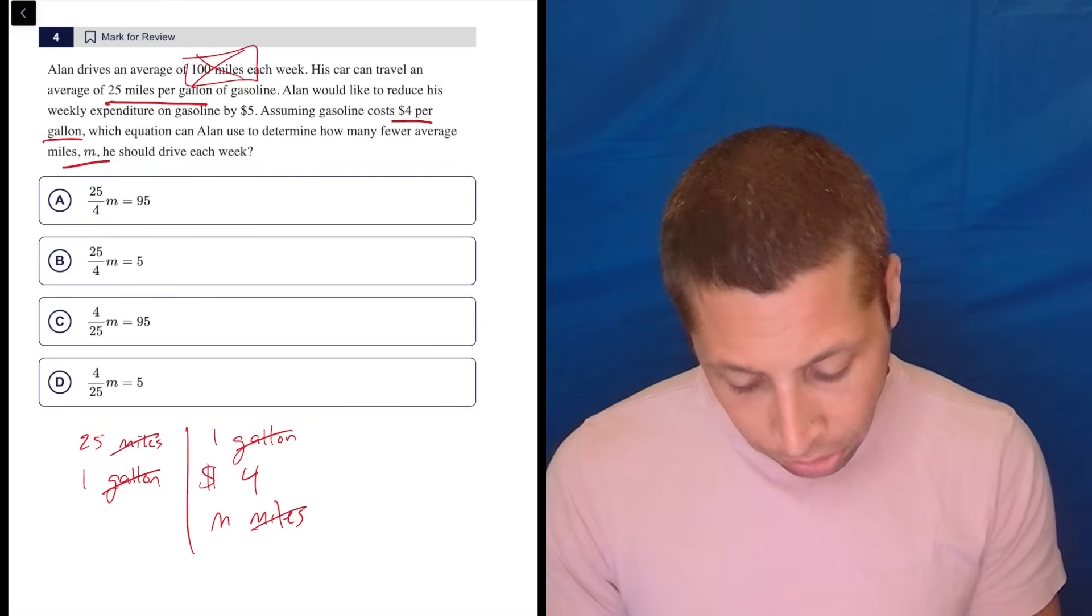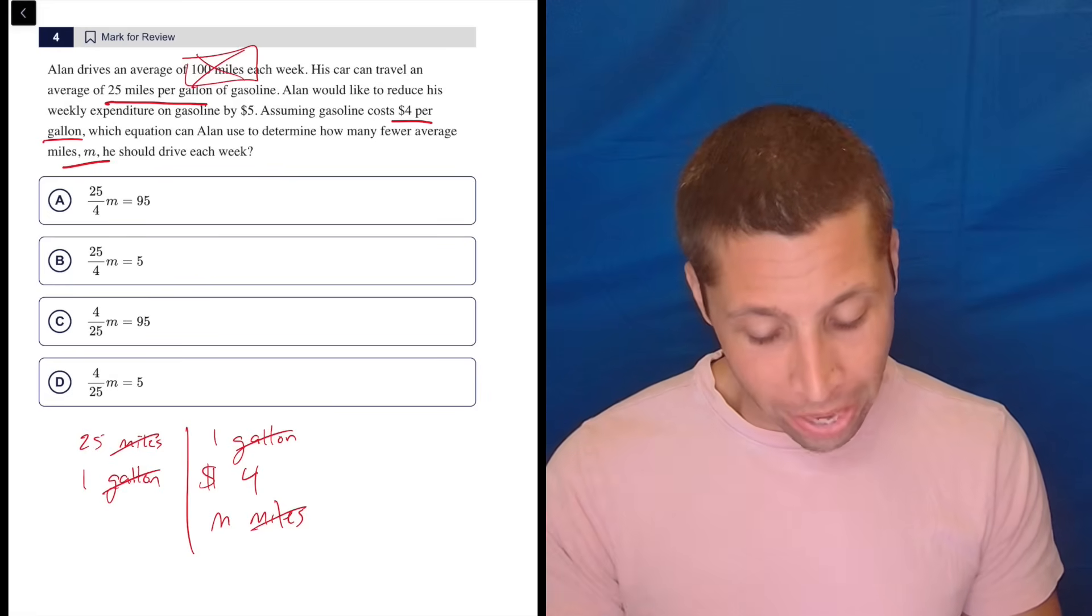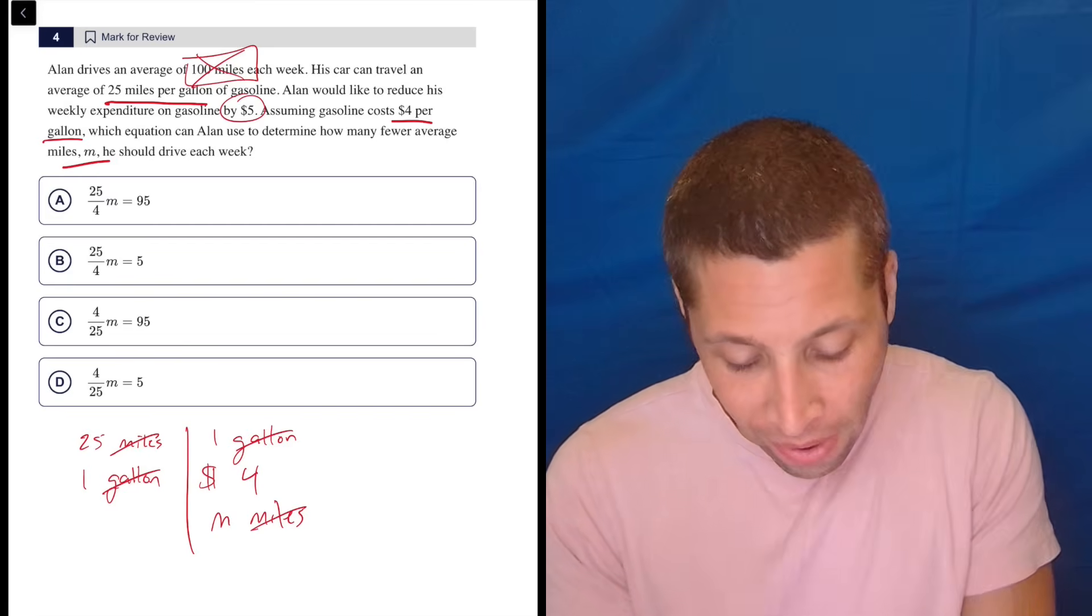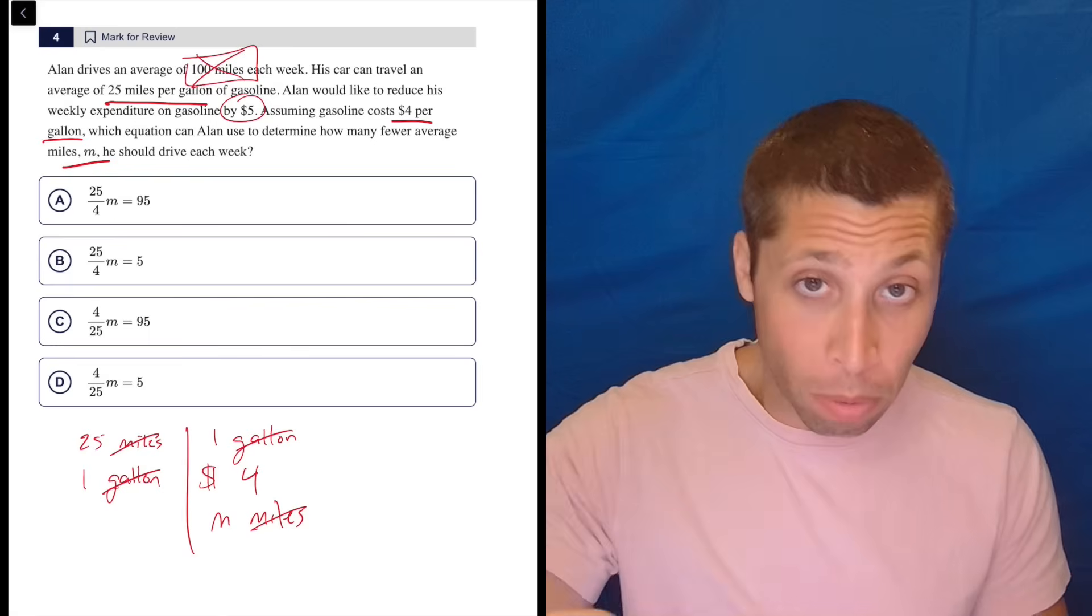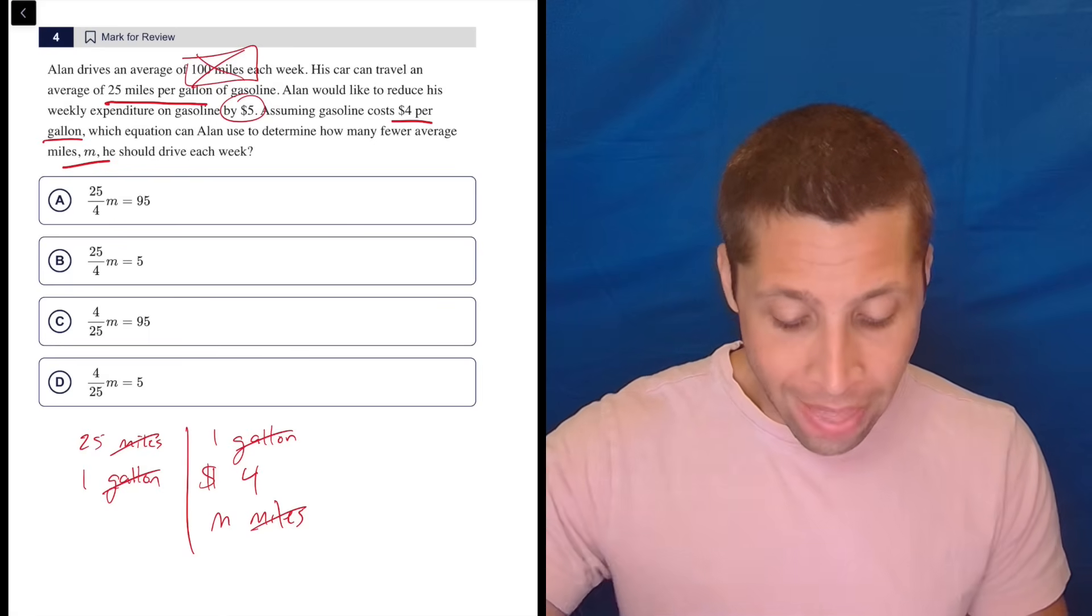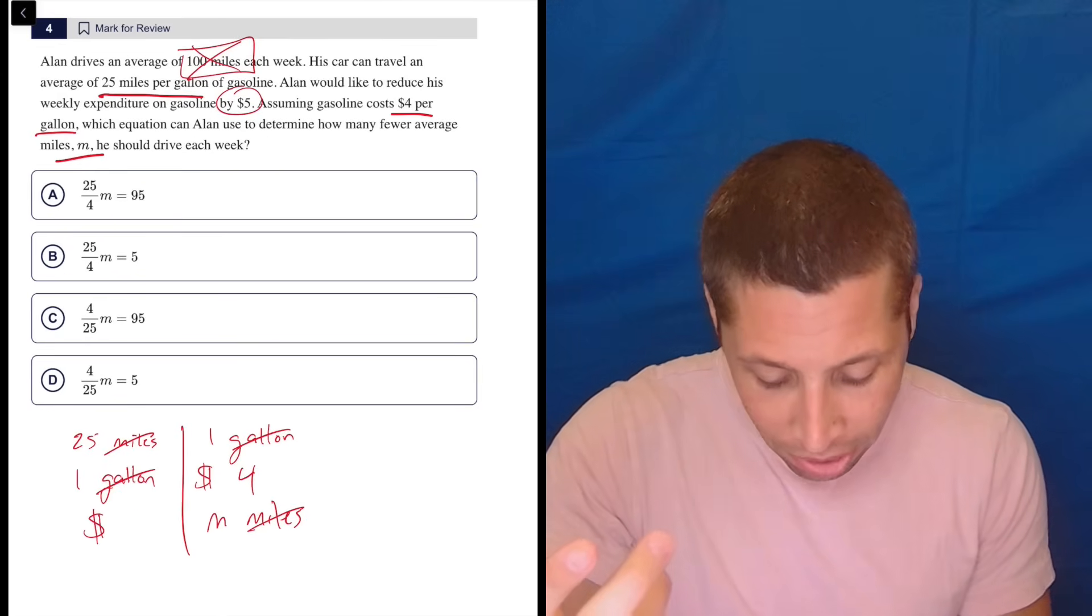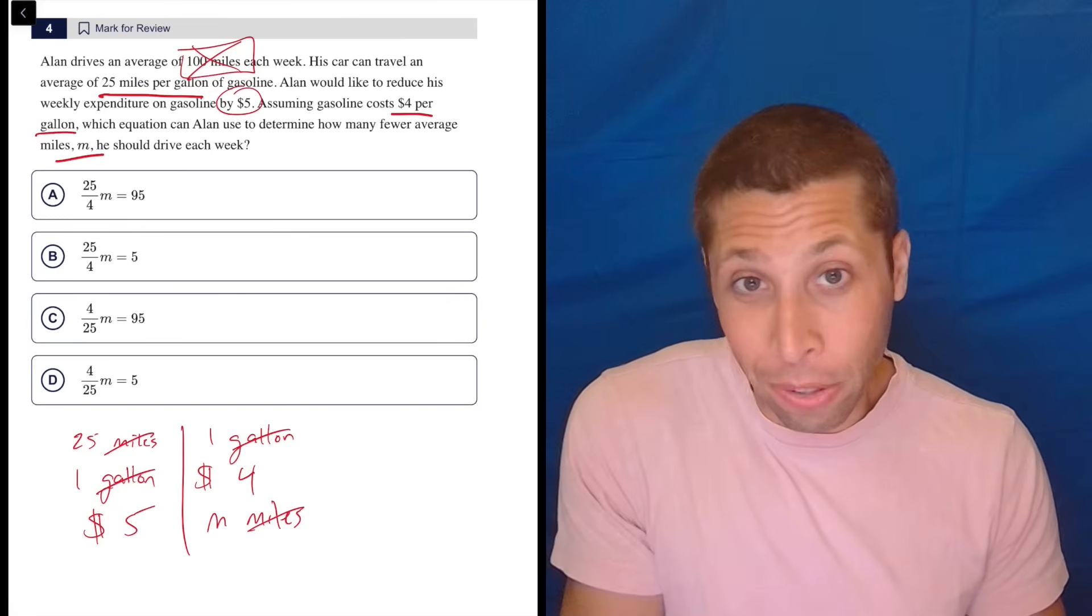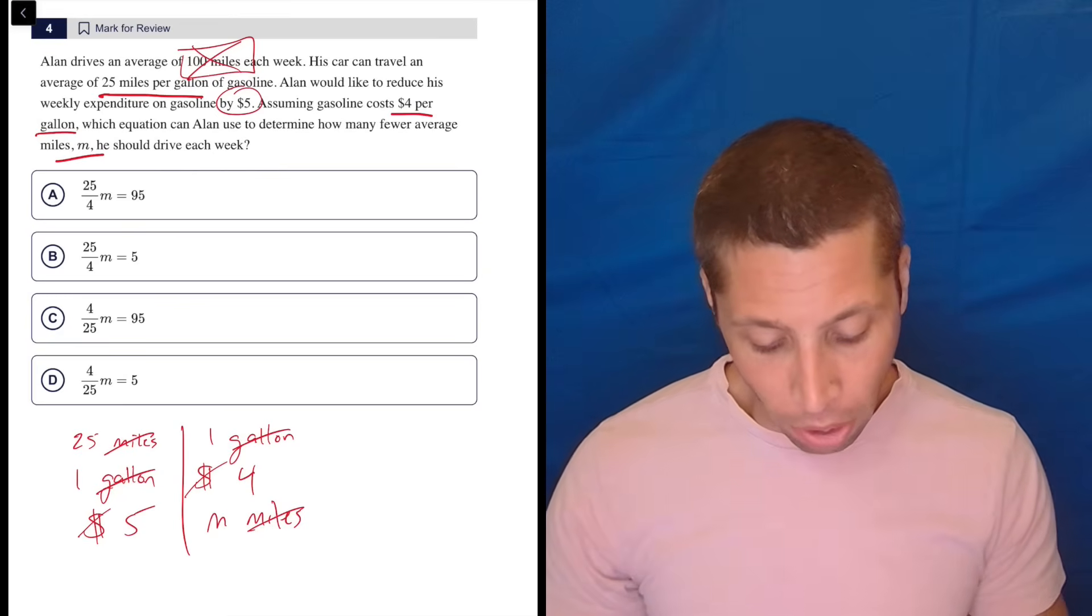But if we get rid of miles, we'd really love to get rid of dollars. So this is where you have to kind of think through the question a bit. And the unit conversion really helps me see what I want. I want dollars. I see $5 right here. Can I relate that $5 to this M miles? Well, he wants to drive M fewer miles per week, and that is going to save him $5. So M miles costs $5 that he's going to save. So that's the relationship. That is a rate. And now the dollars cross out, and we have all of our units gone. So now we can just multiply down.